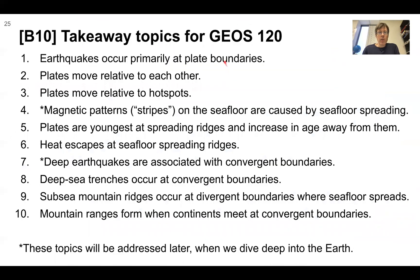Takeaway topics: Earthquakes occur primarily at plate boundaries. Plates move relative to each other. Plates move relative to hotspots. Magnetic patterns or stripes on the seafloor are caused by seafloor spreading. Plates are youngest at spreading ridges and increase in age away from them. Heat escapes at seafloor spreading ridges. Deep earthquakes are associated with convergent boundaries. Deep sea trenches occur at convergent boundaries. Subsea mountain ranges occur at divergent boundaries where seafloor spreads, and mountain ranges form when continents meet at convergent boundaries. Topics four and seven are coming up soon when we dive deeper.